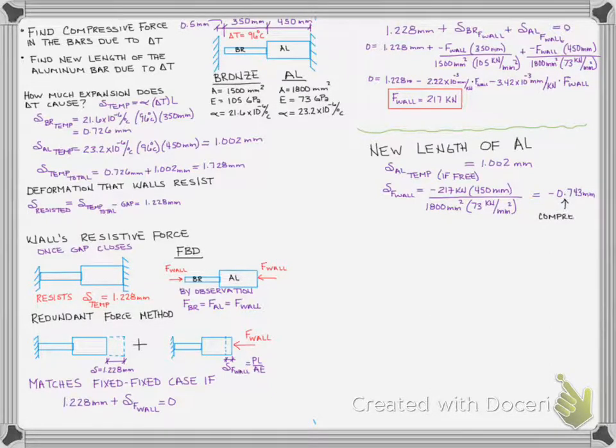And so all we have to do now is add those two together, and that's going to be our total new length. Well, add those together and then add that to our 450 millimeters. And obviously we do get some expansion because the deformation due to the temperature is greater than the deformation due to the force in the wall. And so if we just sum those with our original length, we find out that our new length is going to be 450.26 millimeters, and we're done.